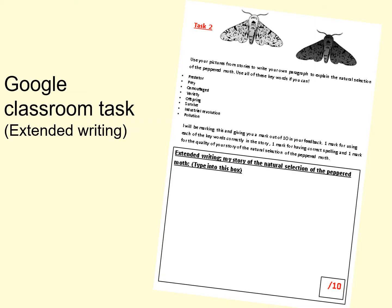For those of you using Google Classroom, there is a task in there now about the peppered moth story. Use your sketch cartoons to type up a paragraph retelling the story in your own words. Use the keywords — predator, prey, camouflage, variety, offspring, survive, industrial revolution, and pollution — and you'll get a mark for using each correctly. I'll be marking this out of 10 with detailed feedback, a mark for spelling, and a mark for the quality of your story. I hope you've enjoyed this lesson and I'll look forward to making another one next week. Have a great week, guys. Bye!